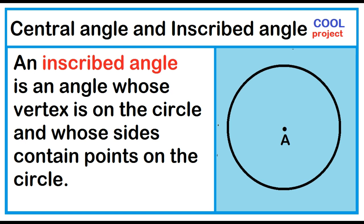An inscribed angle is an angle whose vertex is on the circle and whose sides contain points on the circle. Example: angle D-O-G.